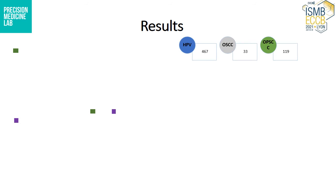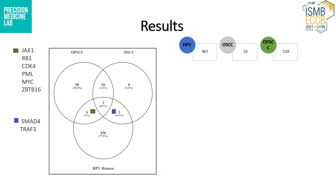By utilizing BioGrade, I initially came up with 467 human proteins that were interacting with HPV. Utilizing the other databases and the literature review, I came up with 33 OSCC and 119 OPSCC key proteins. The next step was to find out the common proteins between OPSCC, OSCC, and HPV human.